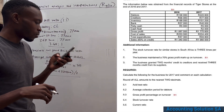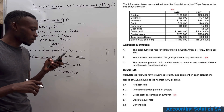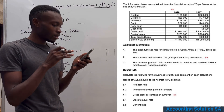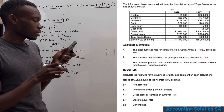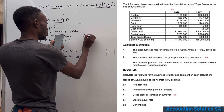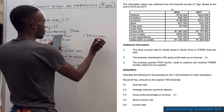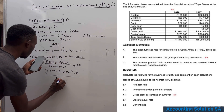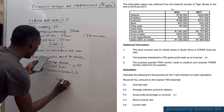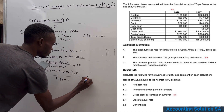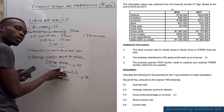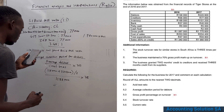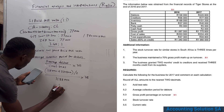For credit sales, the information states that 60% of total sales are on credit. We take 2017 sales of 1,980,000 multiplied by 60%, giving credit sales of 1,188,000. Dividing average debtors by 1,188,000 and multiplying by 365 gives 58.19 days.